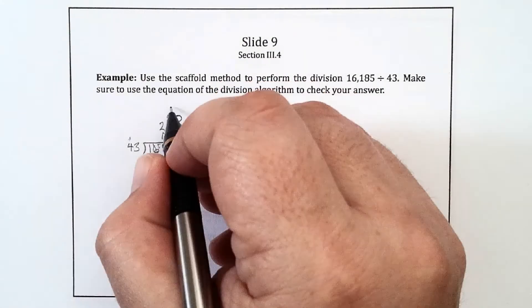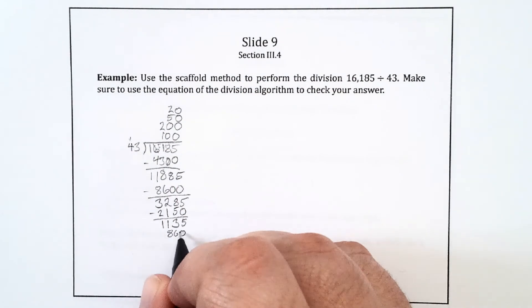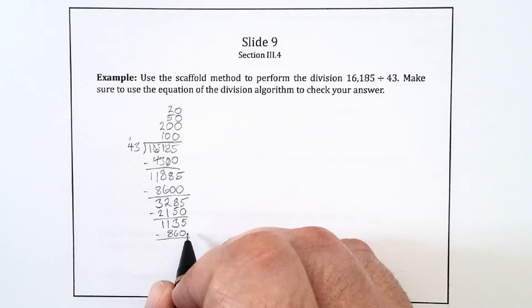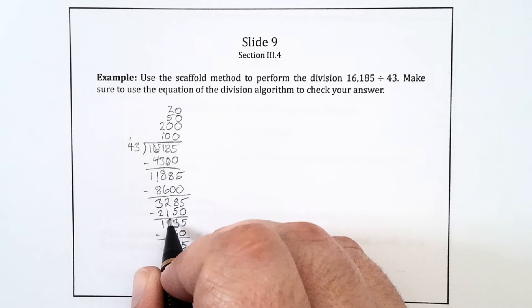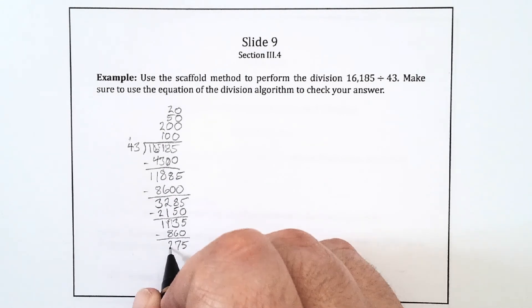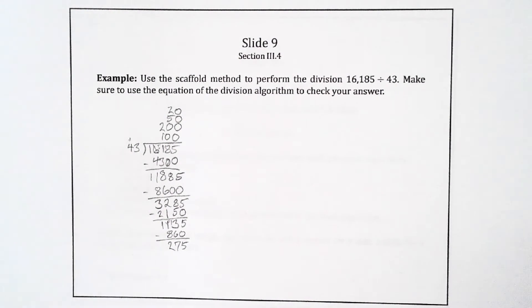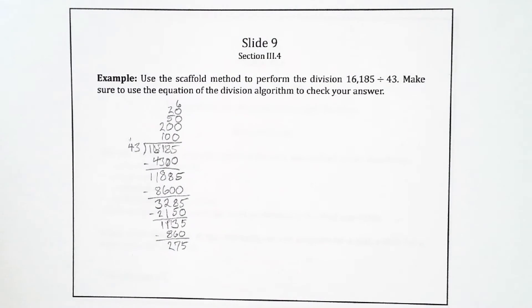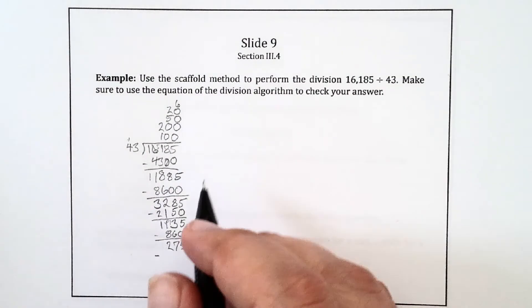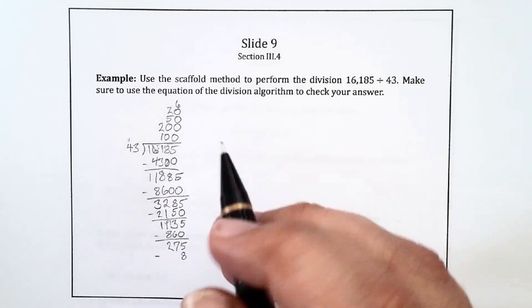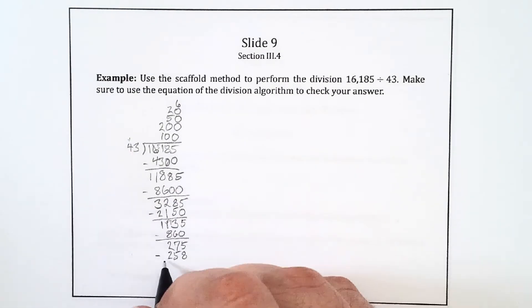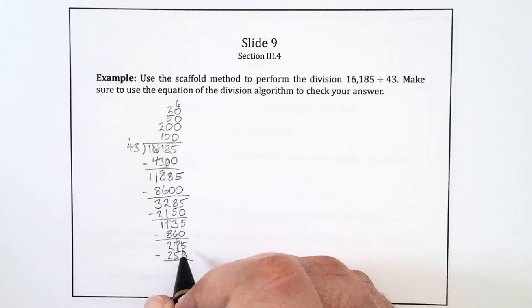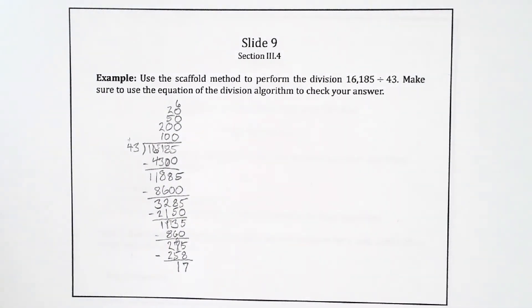I could take away another 20 43s. That would be 860. I get 275 left over. Let's try 6 now. I'm really trying to squeeze those in up there at the top. 6 times 43, I get 258. I have 17 left over. So there I'm done, I can't take away any more 43s.